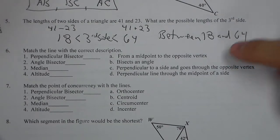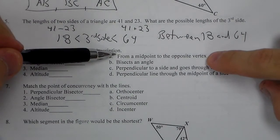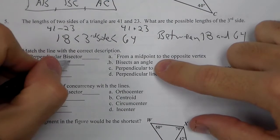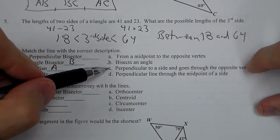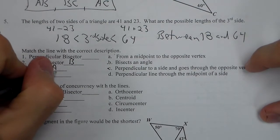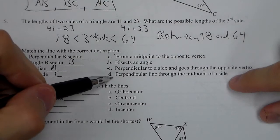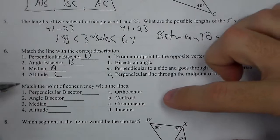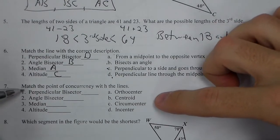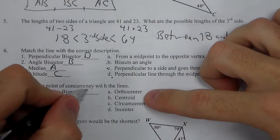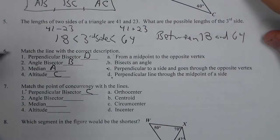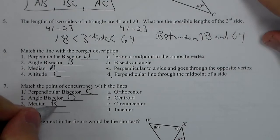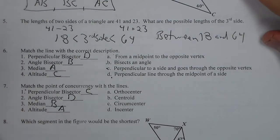For number 6, we need to match the correct description. An angle bisector from a midpoint to an opposite vertex is a median. So that would be A. Bisect an angle would be an angle bisector. B. Perpendicular to a side and goes to the opposite vertex would be an altitude. C, which leaves us with a perpendicular line through the midpoint, is a perpendicular bisector. So then we match the points of concurrency. A perpendicular bisector, those three meet at a circumcenter. An angle bisector meets at an incenter. A median meets at a centroid. And an altitude meets at the orthocenter.